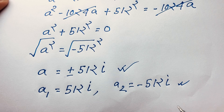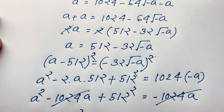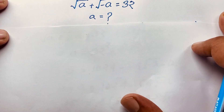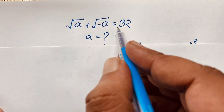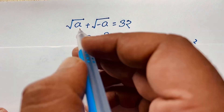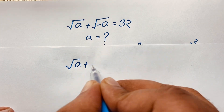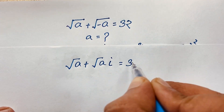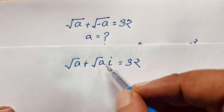Both are complex solutions — complex numbers. There is no real solution. Now I will solve this question using another method. Square root A plus square root minus A equals 32, which can be written as square root A plus square root A times i equals 32, because square root of negative 1 is i.